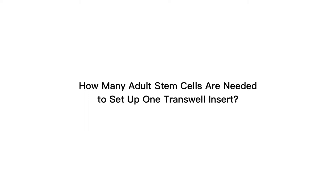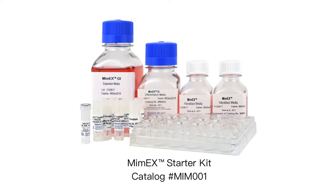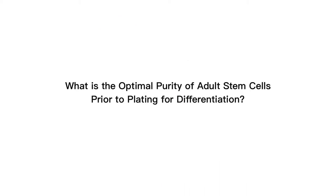Current cell lines available can be found at www.rndsystems.com/mimics. Mimics tissue model systems is optimized for adult stem cell expansion in a six-well plate. One well of a six-well plate provides enough cells to seed one transwell insert in a 24-well plate — approximately 450,000 cells per 24-well insert. The Mimics starter kit provides enough reagents to prepare 12 transwell inserts for differentiation.